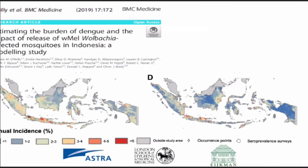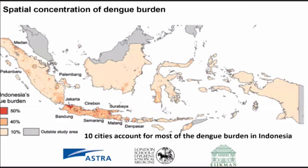This is work also done from the London School in Indonesia, looking at the use of modified mosquitoes — Wolbachia-infected mosquitoes — to see whether this can be used to prevent transmission chains. Here we're looking at the annual incidence of dengue across Indonesia. You can see that there are hotspots, those places in red, where there's more dengue than elsewhere. In fact, if you look closer, 10 cities account for most of the dengue burden across Indonesia.